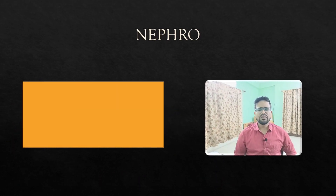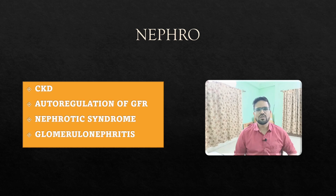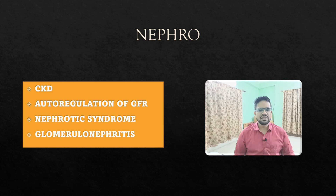For nephrology, it is not the most heavily tested area for UPSC CMNS, but two or three topics are really asked: CKD, nephrotic syndrome, nephritis, and autoregulation of GFR. CKD is the most important — read it thoroughly, especially its relationship with diabetes mellitus, which is asked again and again.